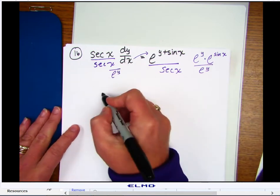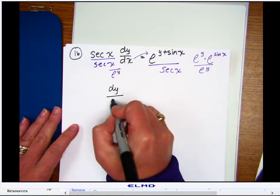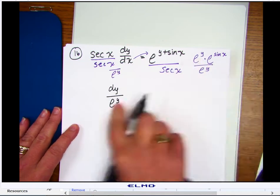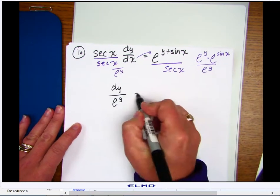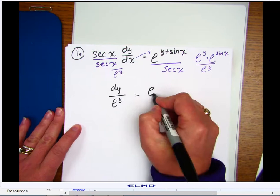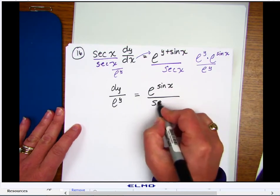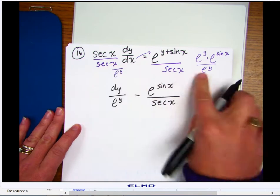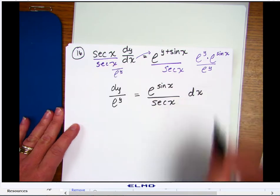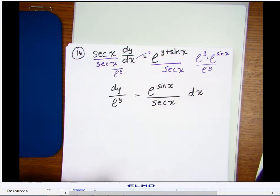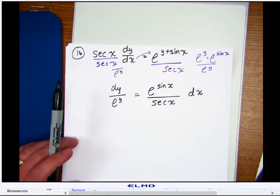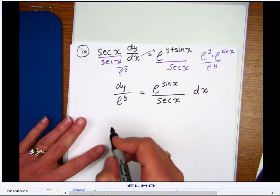So over here, we would have dy over e to the y. We just moved this over by dividing both sides by e to the y. And over here, we would have e to the sine x all over secant x, divided both sides by secant. And then our dx. But again, we have to know a little something about the secant of x. One over the secant of x is actually the cosine of x.